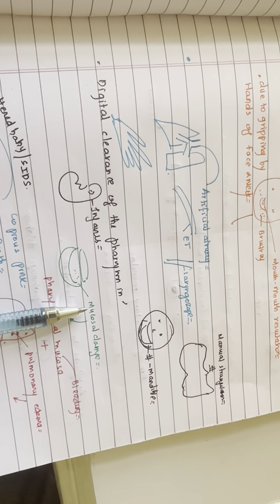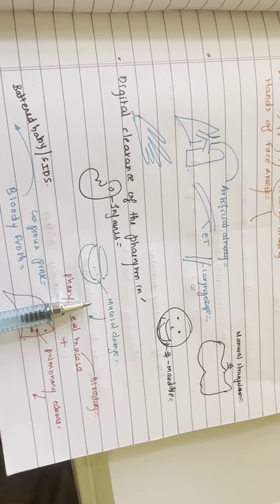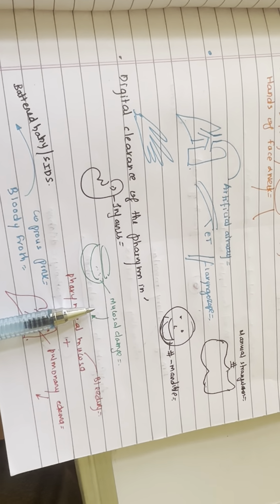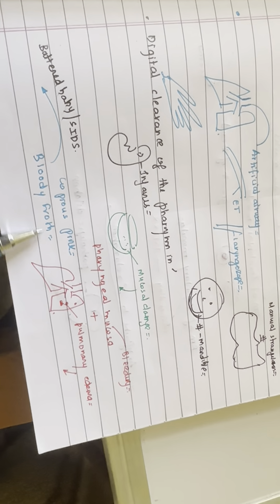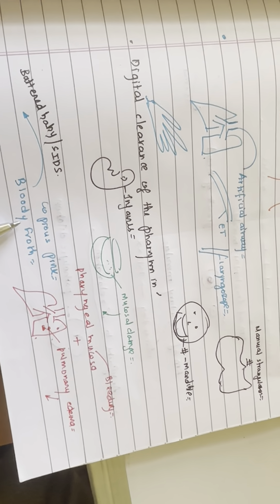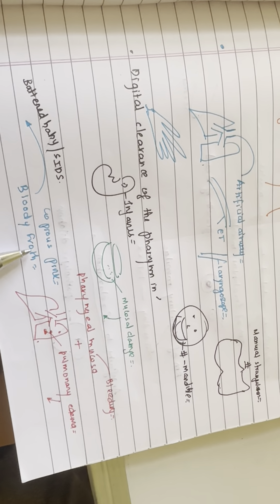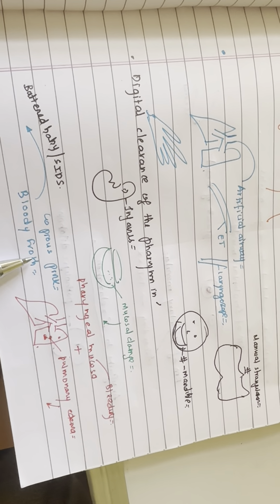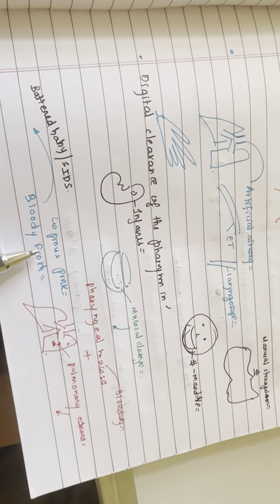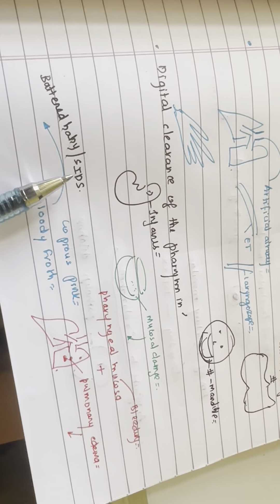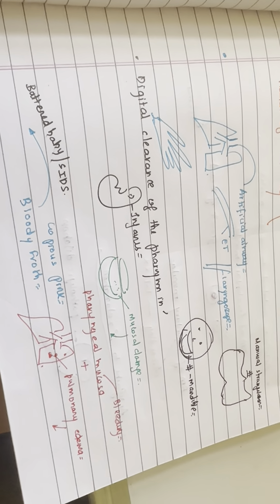Damage to the pharyngeal mucosa may cause bleeding, which may be mixed with fluid from pulmonary edema to produce a bloody froth in the throat. This may give a picture mimicking battered baby syndrome or sudden infant death syndrome (SIDS).